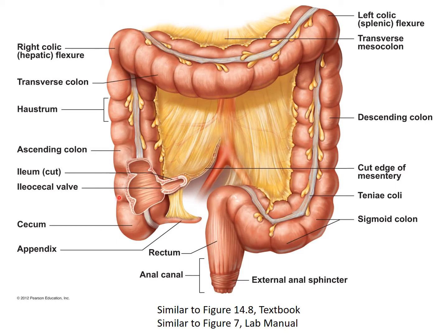The large intestine includes the following: the cecum, the appendix, the ascending, transverse, and descending colons, the sigmoid colon — sigmoid means S-shaped, notice the sigmoid colon is S-shaped — the rectum, and the anal canal, which connects the rectum to the anus, which is the opening through which feces passes from the large intestine to the outside world.